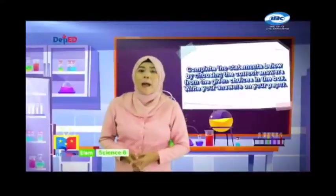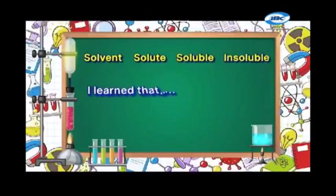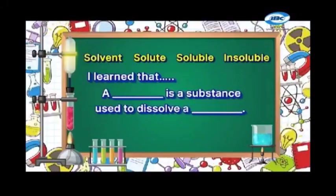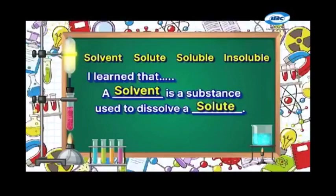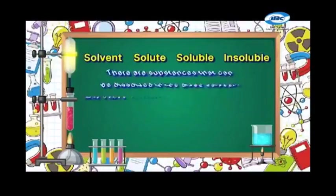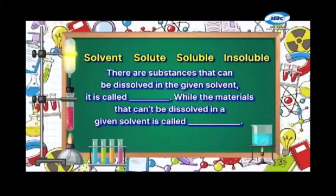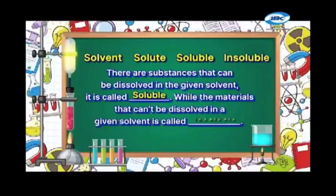Now for our What I Have Learned part. Complete the statements by choosing the correct answers from the given choices in the box and write your answers on your paper. A solvent is a substance used to dissolve a solute. On the other hand, a solute is a substance that is being dissolved. Substances that can be dissolved in a given solvent are called soluble, while materials that cannot be dissolved in a given solvent are called insoluble.